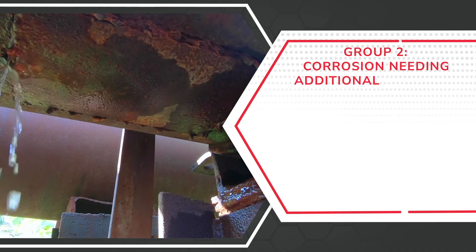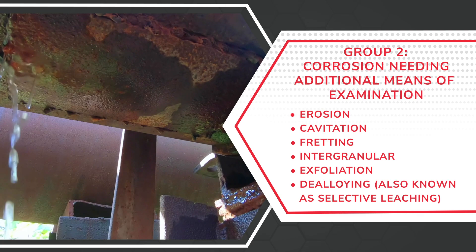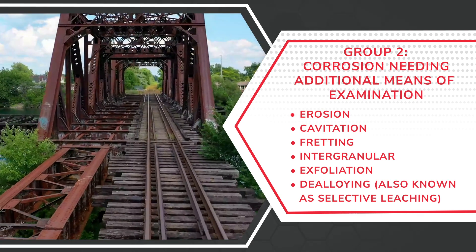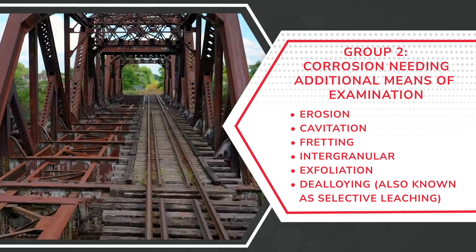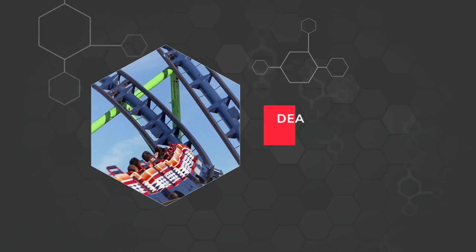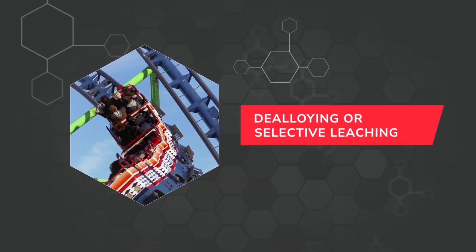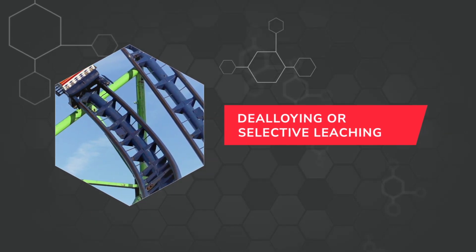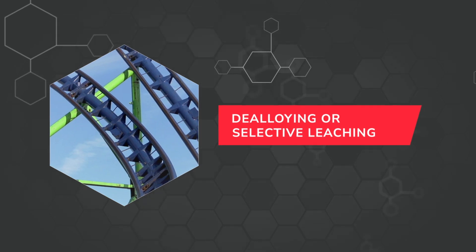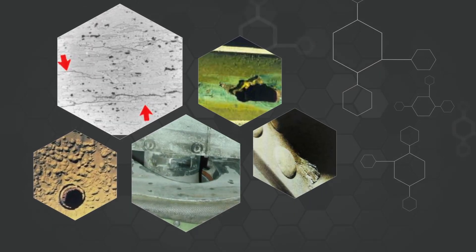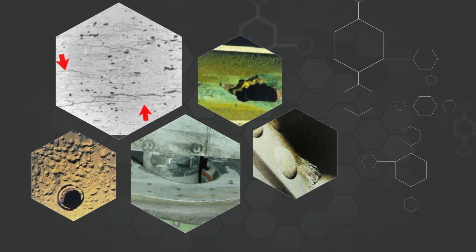The next group of corrosion includes types that require additional examination. Often, this corrosion is caused by ongoing exposure to corrosive fluids, gas pockets, and chemical segregation that deteriorates grain boundaries in the microstructure of metals and alloys. Dealloying, or selective leaching, for example, is when one element of an alloy is removed through the corrosion process and the structure retains its appearance while becoming weaker structurally. With these types of corrosion, the mechanical properties of the structure can be seriously affected and lead to failure.